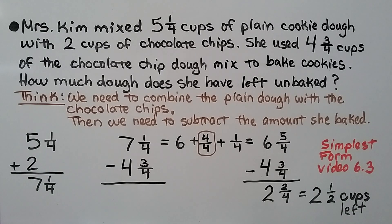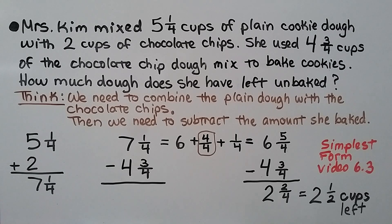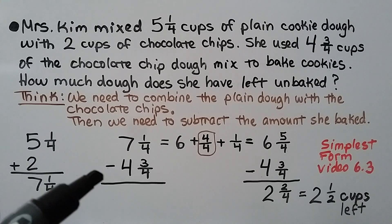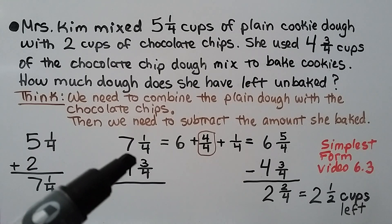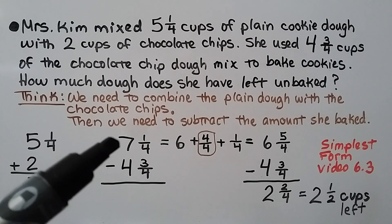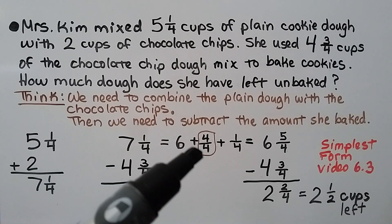Ms. Kim mixed 5 and 1 fourth cups of plain cookie dough with 2 cups of chocolate chips. She used 4 and 3 fourths cups of the chocolate chip dough mix to bake cookies. How much dough does she have left unbaked? We need to combine the plain dough with the chocolate chips: 5 and 1 fourth plus 2 gives us 7 and 1 fourth. Now we need to take the 7 and 1 fourth and subtract the amount she used to bake cookies. We can't take 3 away from 1, so we rename this 7 as a 6 plus 4 fourths.